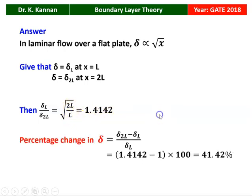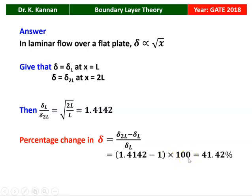Square root of 2 equals 1.4142. The percentage change in delta L is: (delta 2L minus delta L) divided by delta L, multiplied by 100, which equals (1.4142 minus 1) into 100, equal to 41.42 percent.